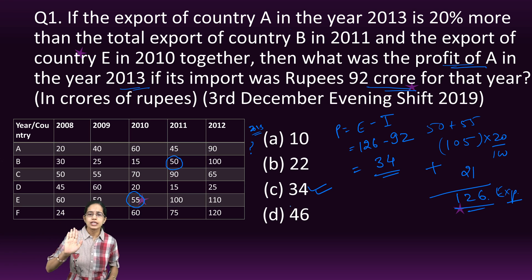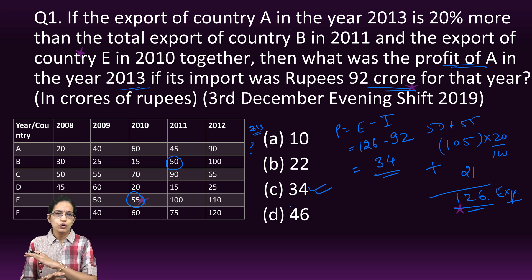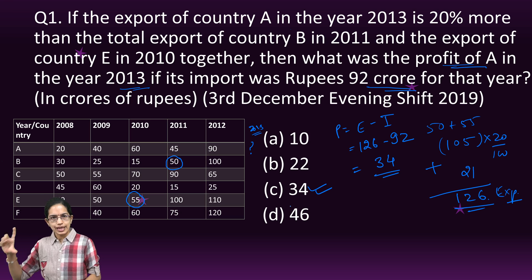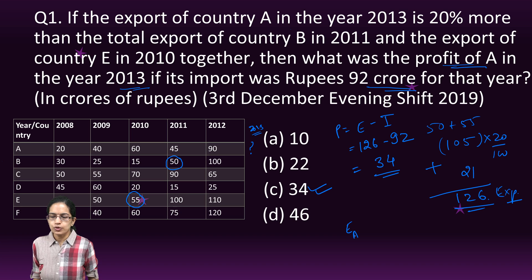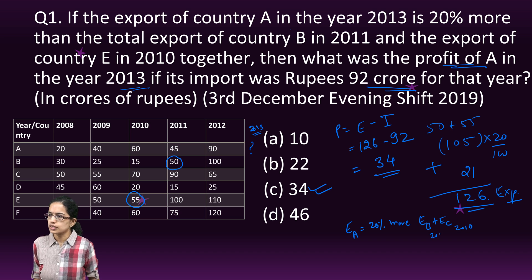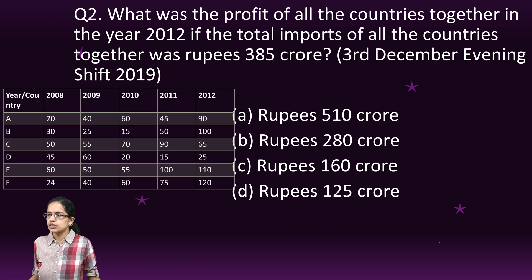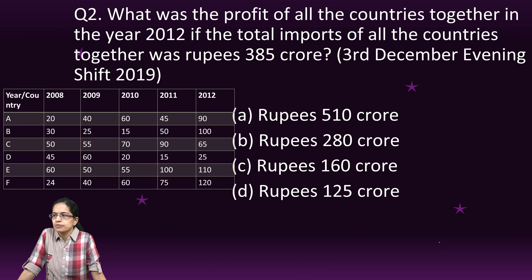This was a very simple question — no complicated mathematics involved, just a direct question based on understanding the text. To summarize: export of A equals 20% more than the sum of export of B in 2011 and export of E in 2010. That is one of the very simple types of questions.